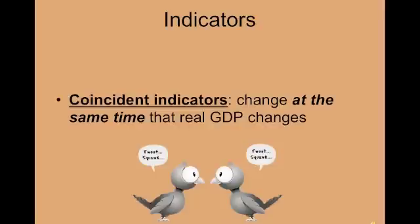Coincident indicators change at the same time that real GDP changes. So these are things you're looking at that change simultaneously with real GDP — hence the name coincident. They change at the same time that real GDP changes, and here's a list of those coincident indicators.